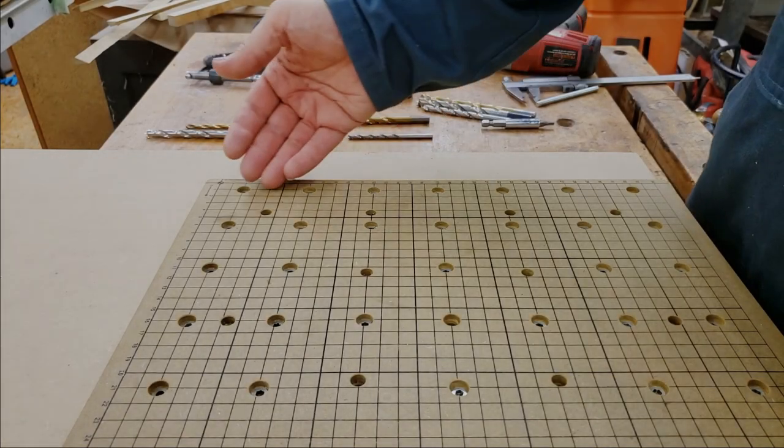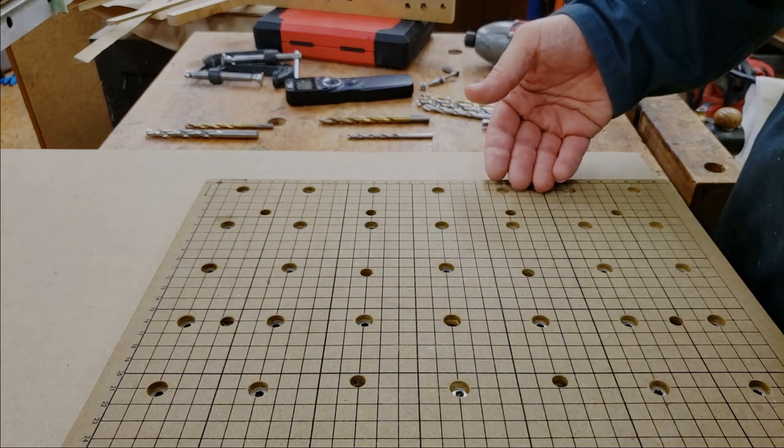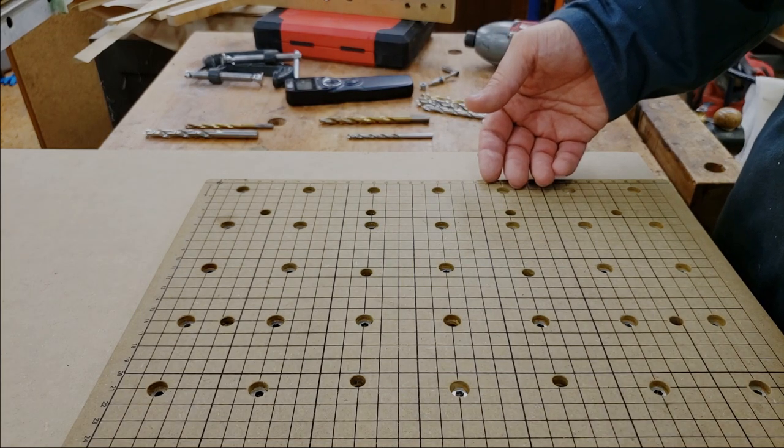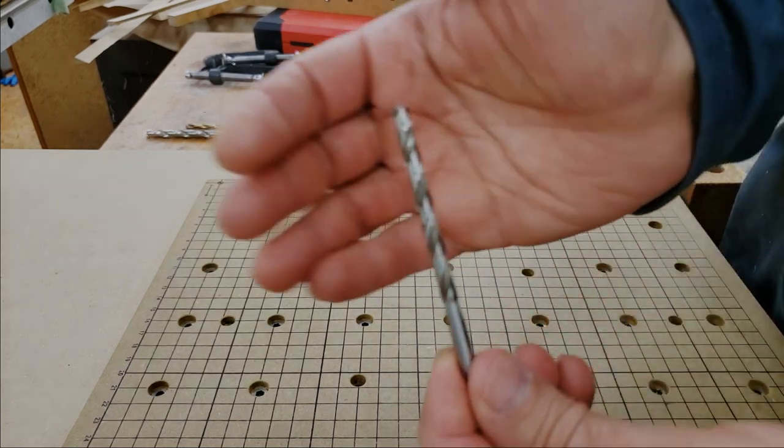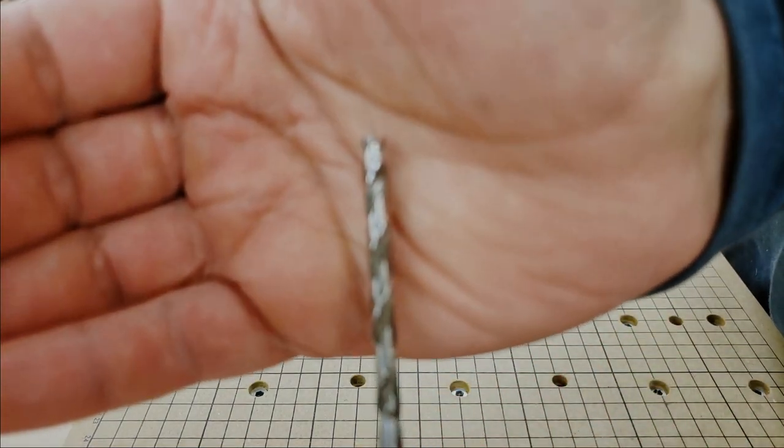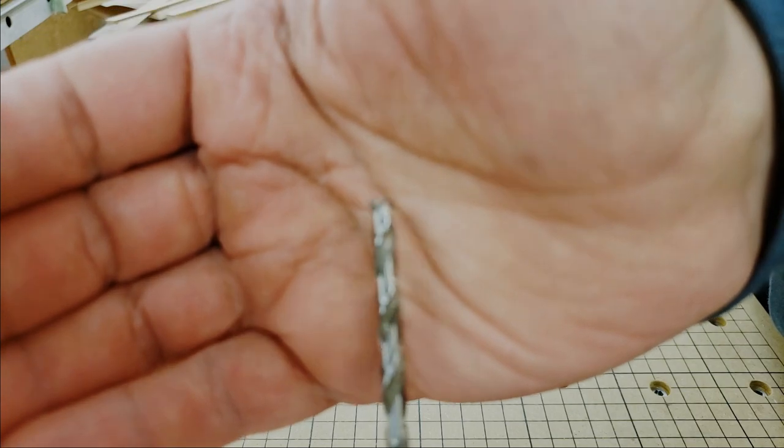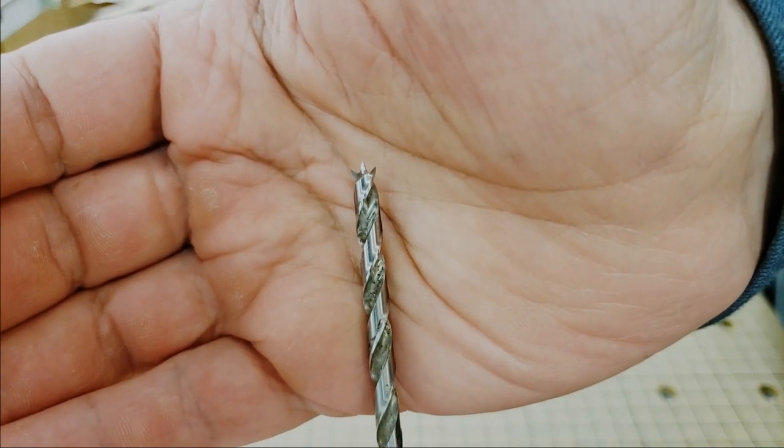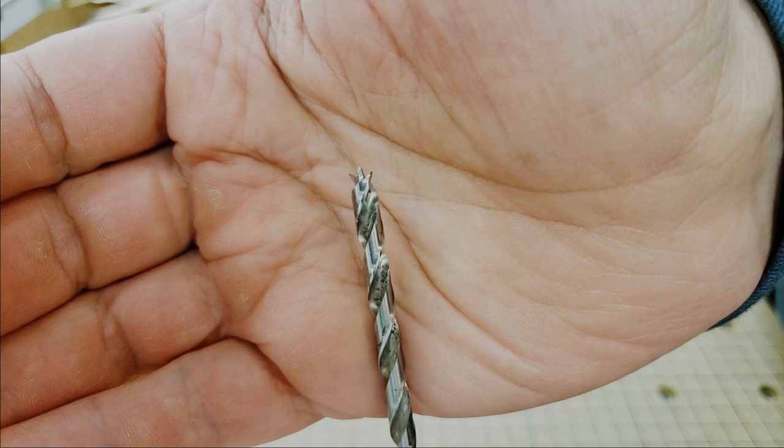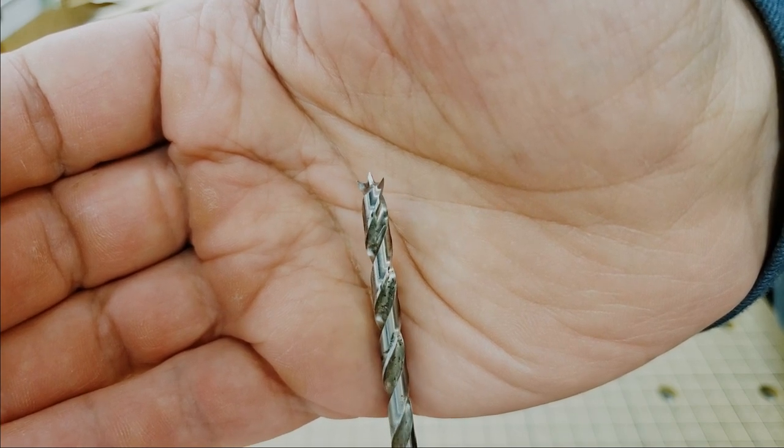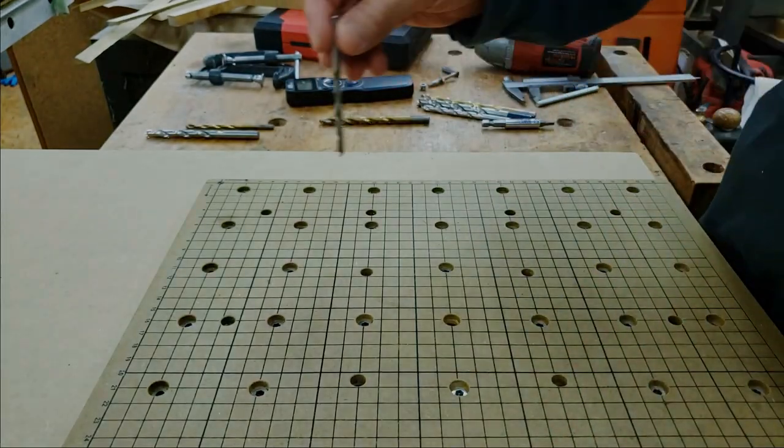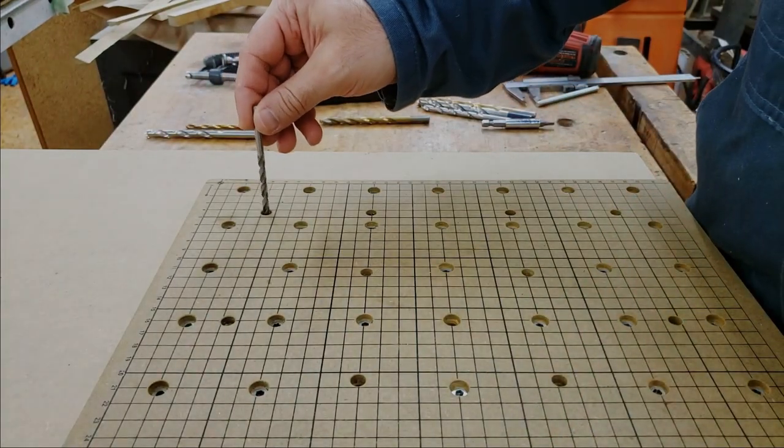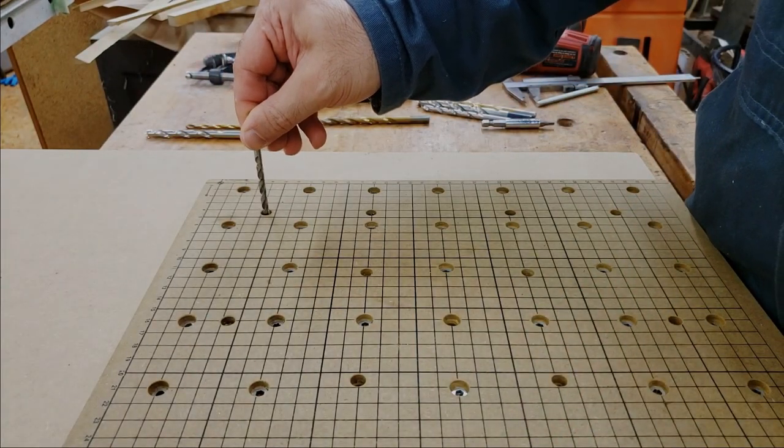Step number one is to remove all the hardware and step number two is to mark all the holes. The way I am going to be marking holes is I'm going to be using the sharp point of the drill bit and I'm either going to do a little twist or I'm going to use a hammer and gently tap. That way the sharp point will make an indentation in the MDF underneath and that way I know where the hole is.